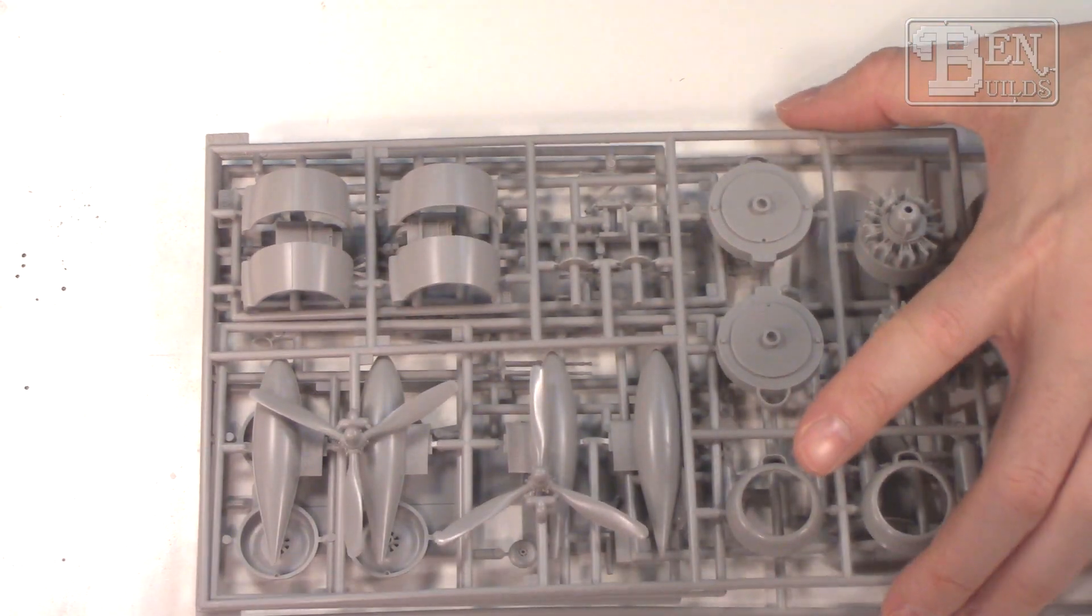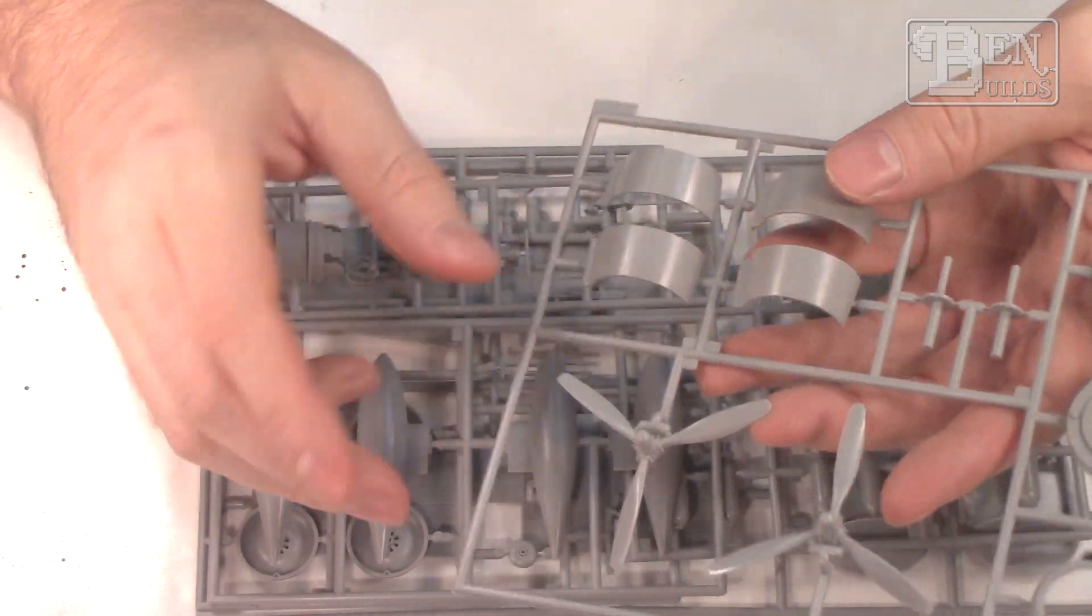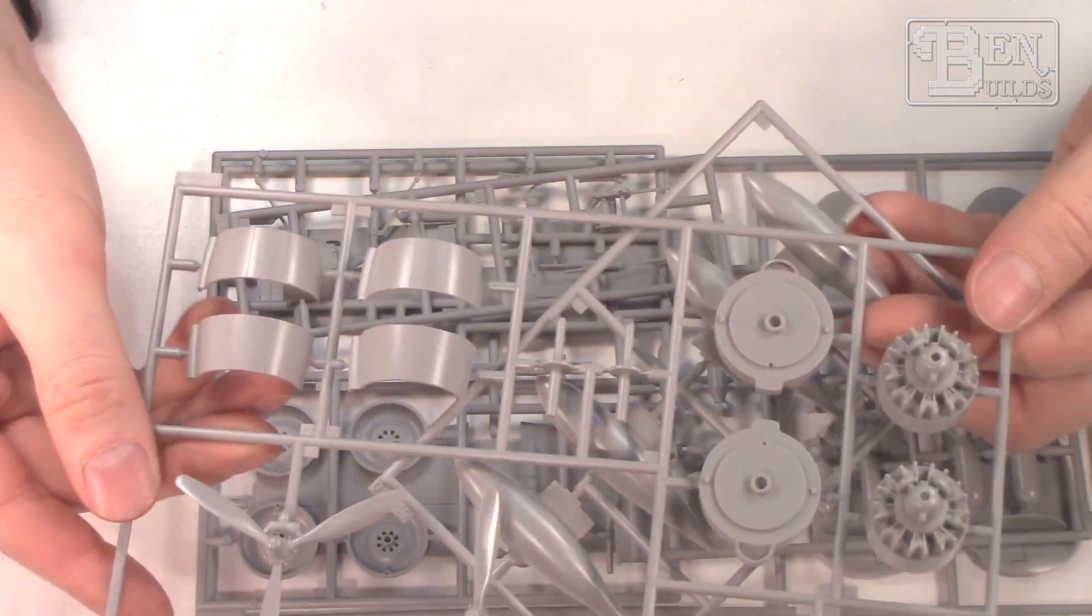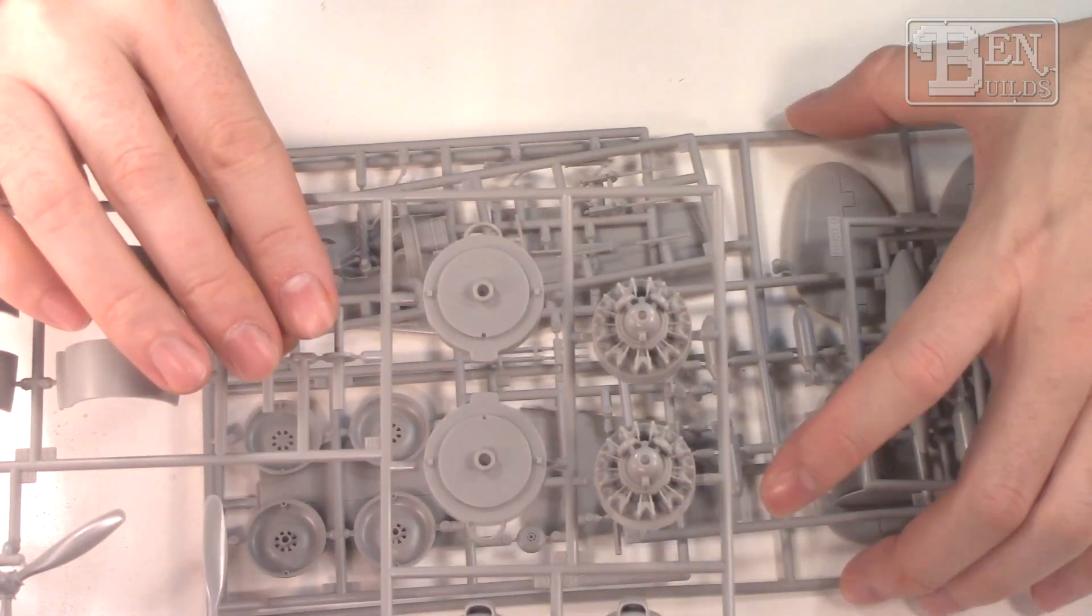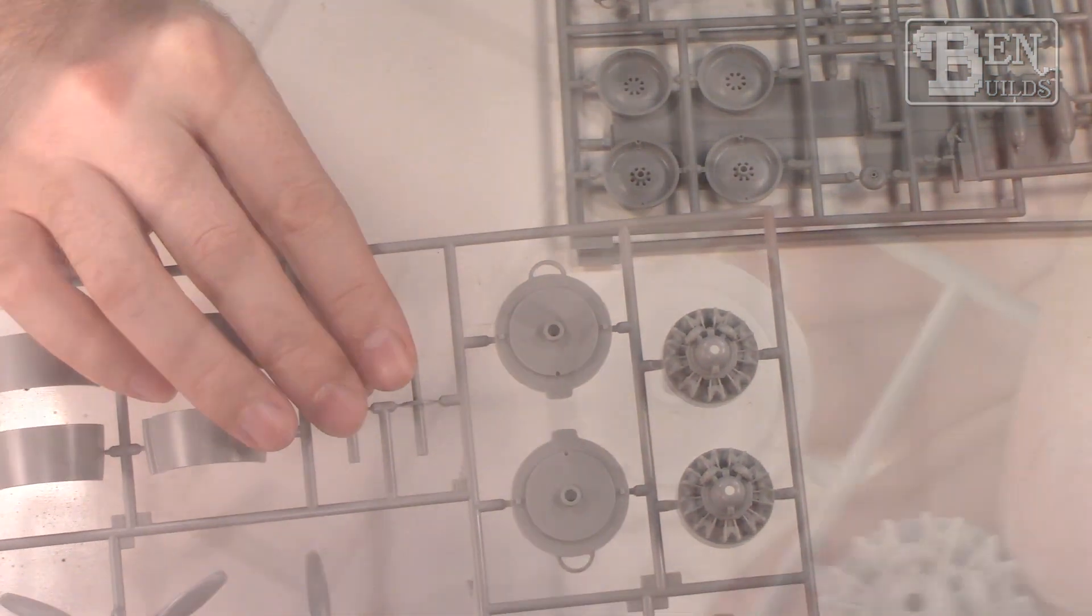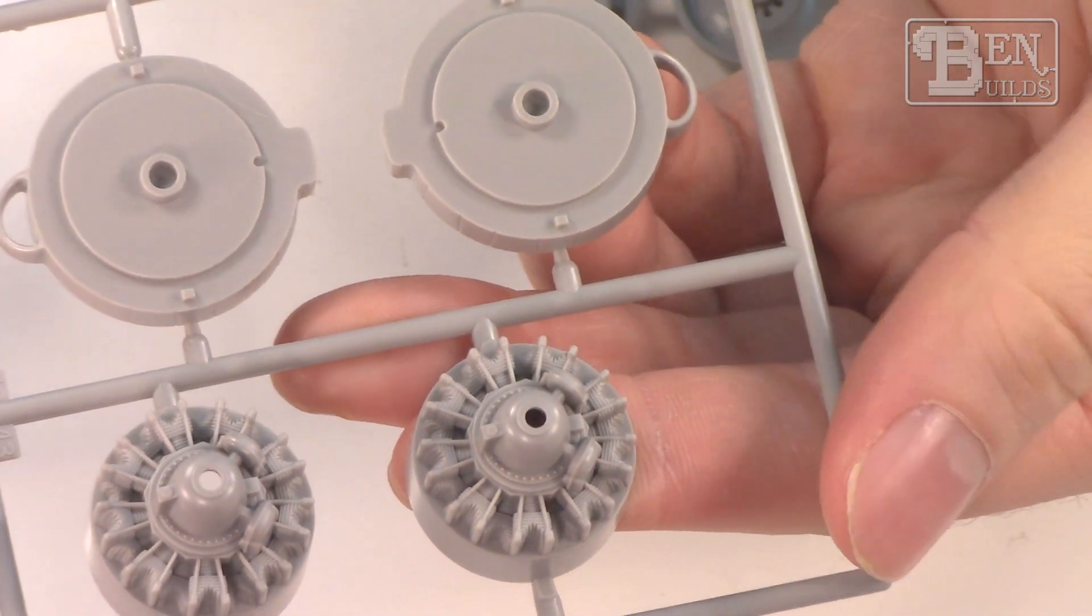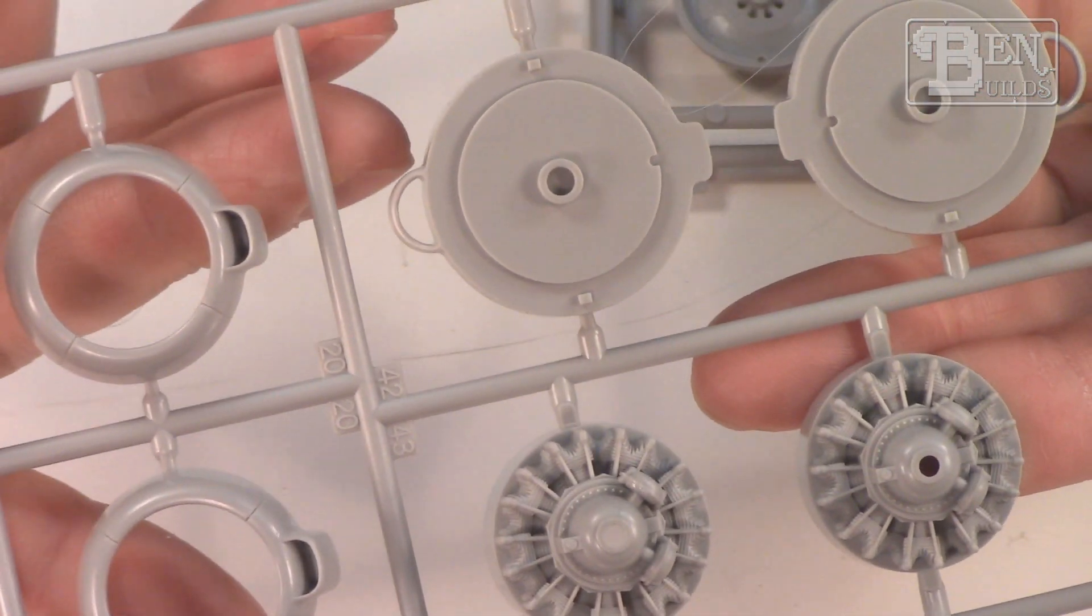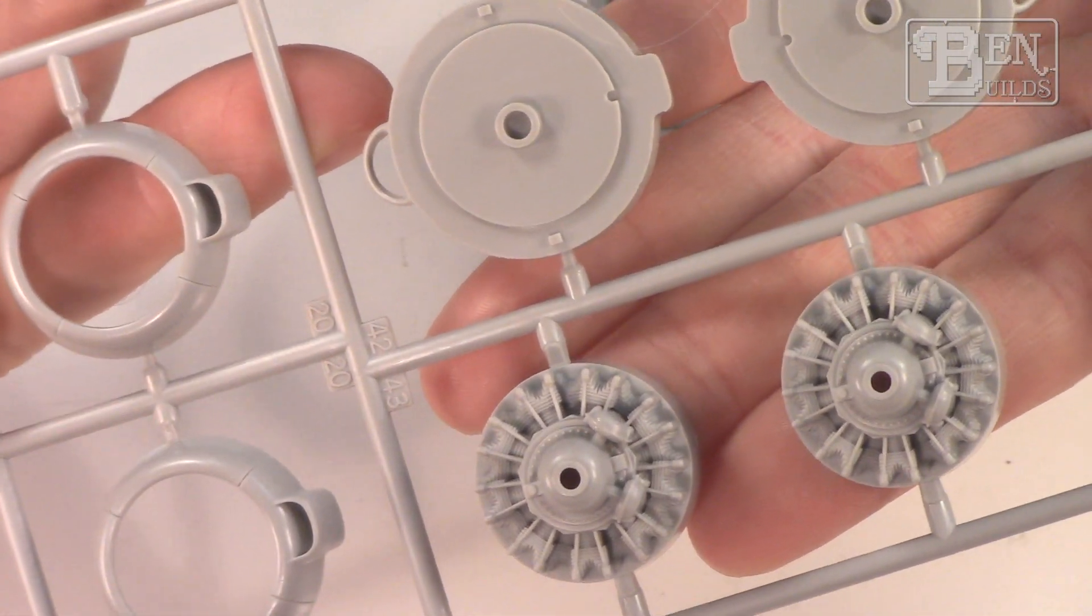Moving on to the next sprue, we have the propeller blades. I was reading on an internet forum that said these were too thin, that they should have a broader chord. I don't know if that's true but I'm going to look into it. I will say that these engine details are super nice. Let me zoom in here so you can check them out a little closer. This is some nice detail on these engines, very detailed for plastic. I'm pleased about that. I might want to add maybe some wiring to it depending on how much is visible behind those cowlings. Well done Revell.